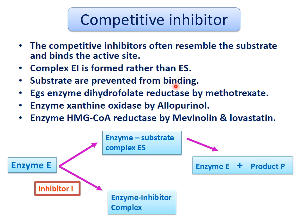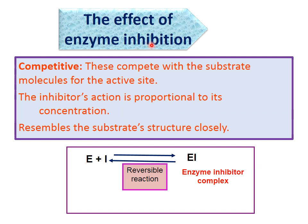Examples of competitive inhibition include: dihydrofolate reductase inhibited by methotrexate, a drug used for cancer treatment; xanthine oxidase inhibited by allopurinol, a medicine used for gout to reduce uric acid production; and HMG-CoA reductase, responsible for cholesterol synthesis, inhibited by drugs like mevastatin and lovastatin, which reduce cholesterol synthesis.